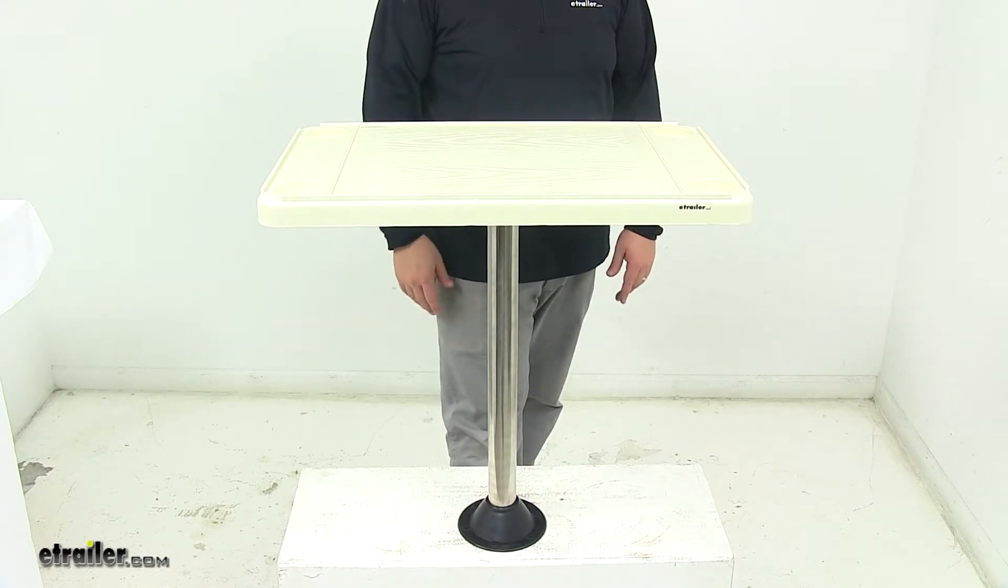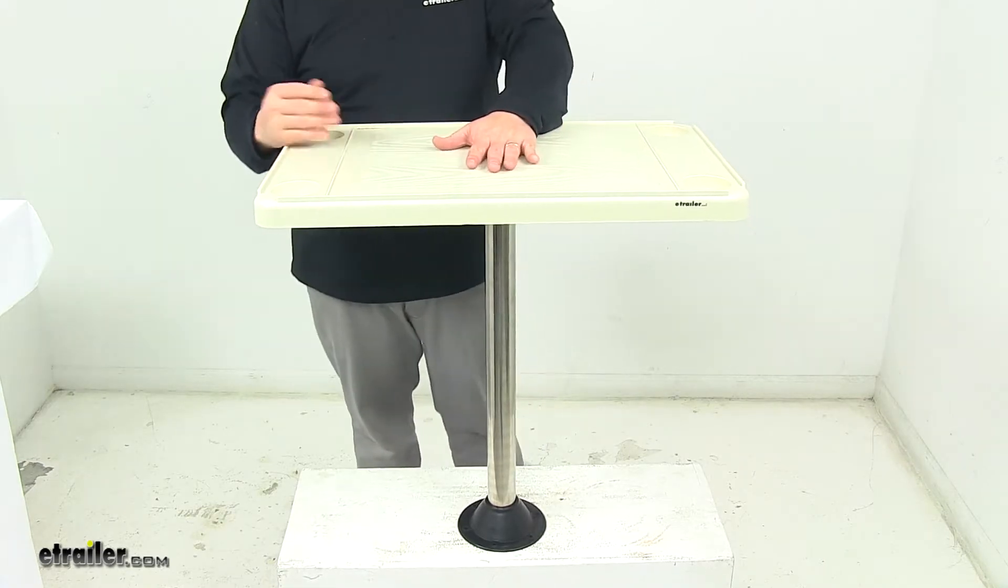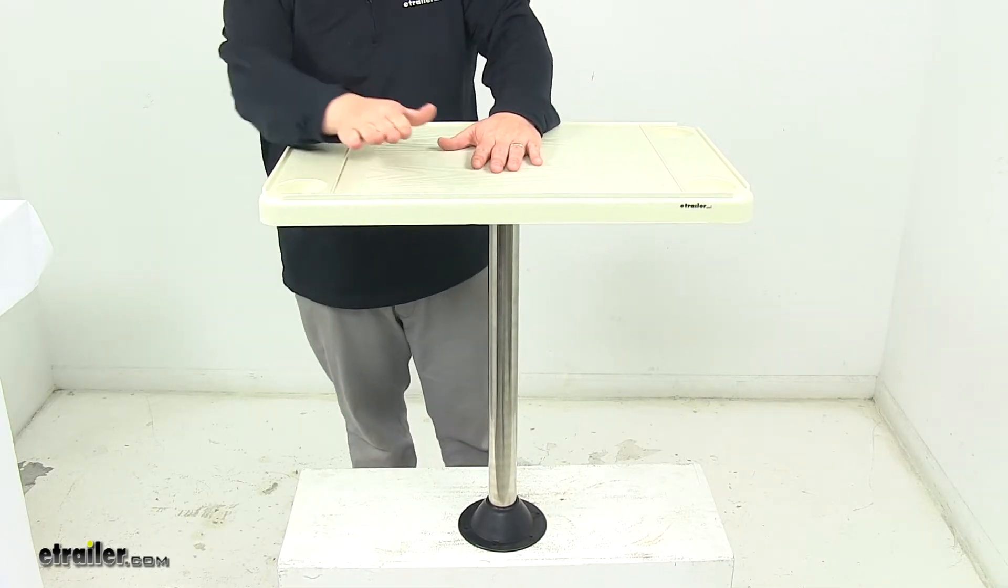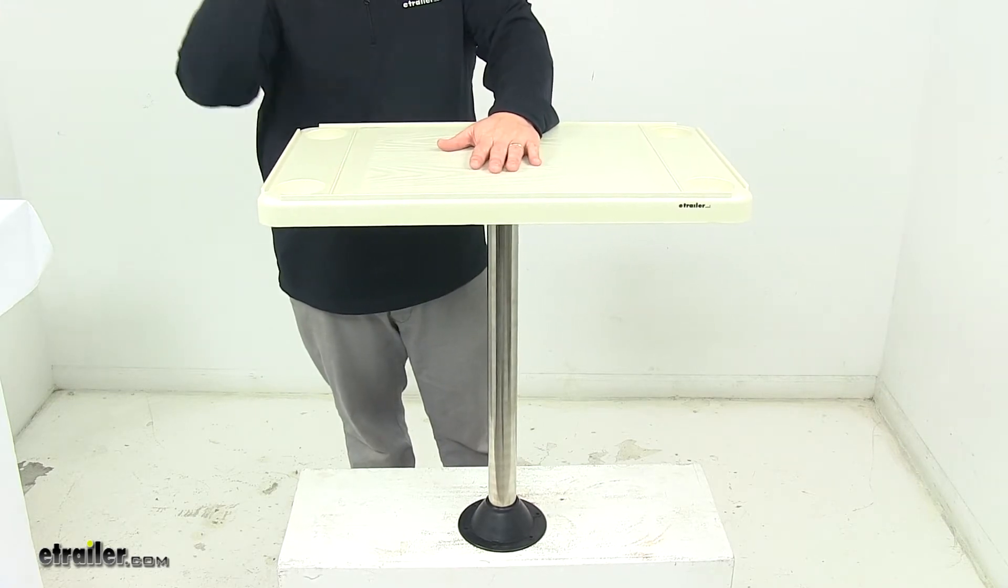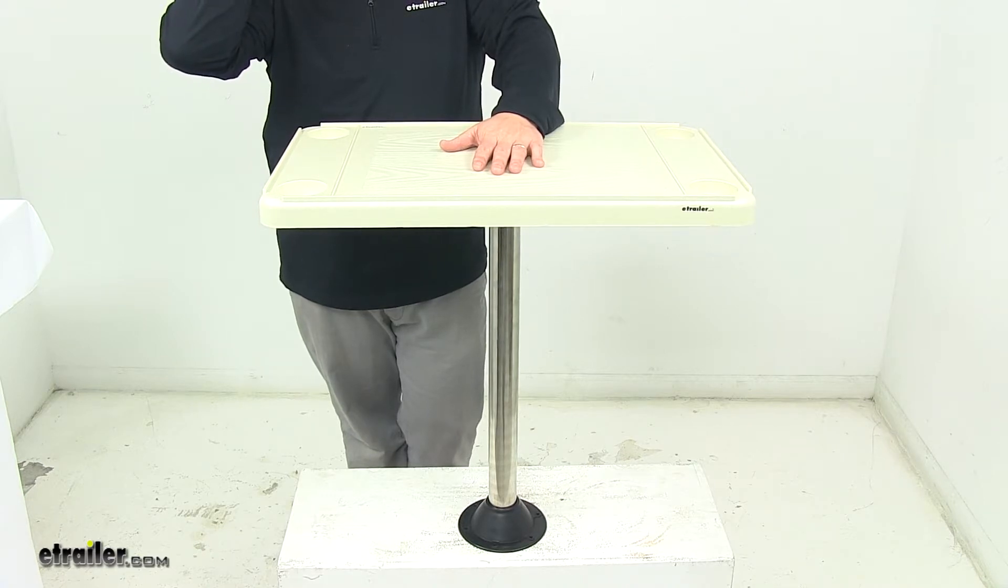Again, the base diameter is six and a half inches. The surface mount table has an overall height from the installation surface to the top of 26 and three-quarter inches. The recessed flush mount measures 25 and three-quarter inches tall.